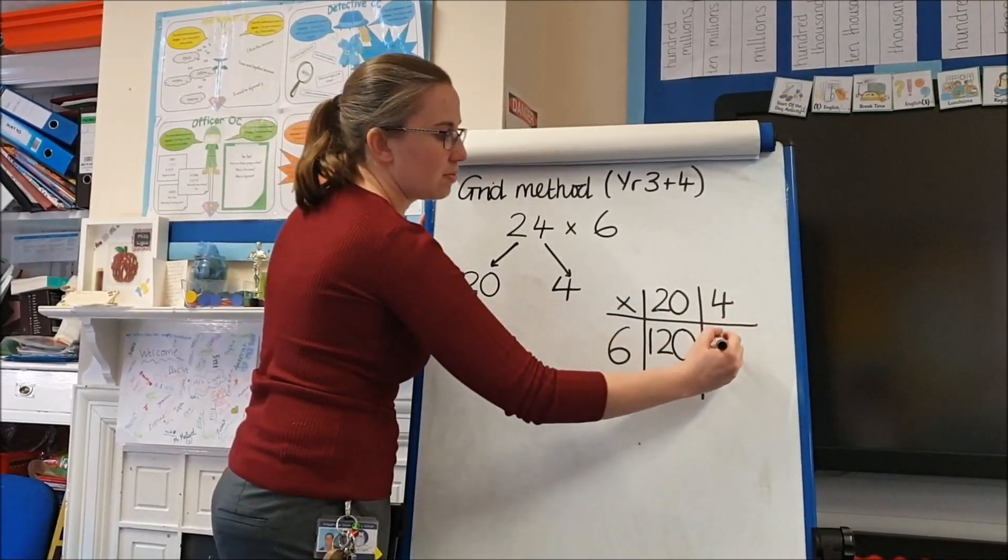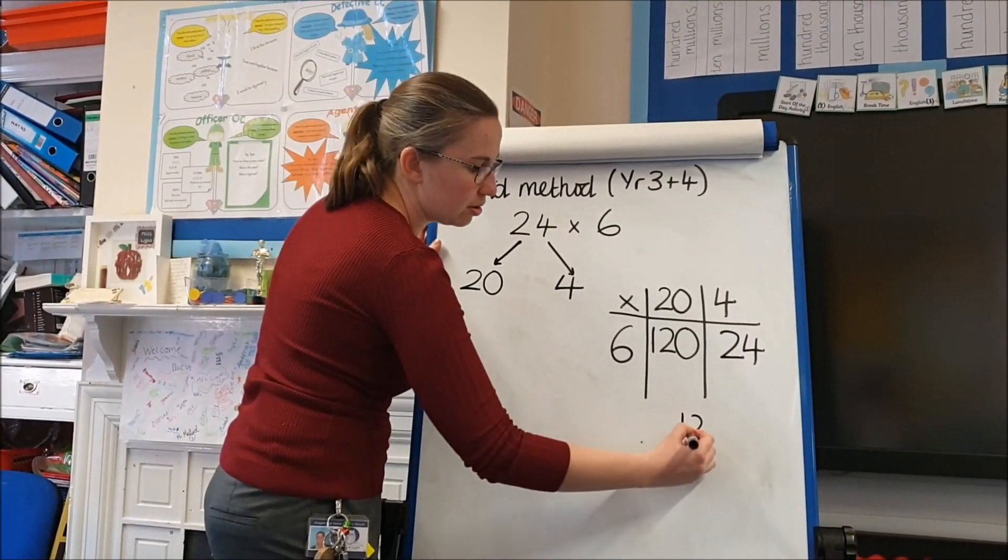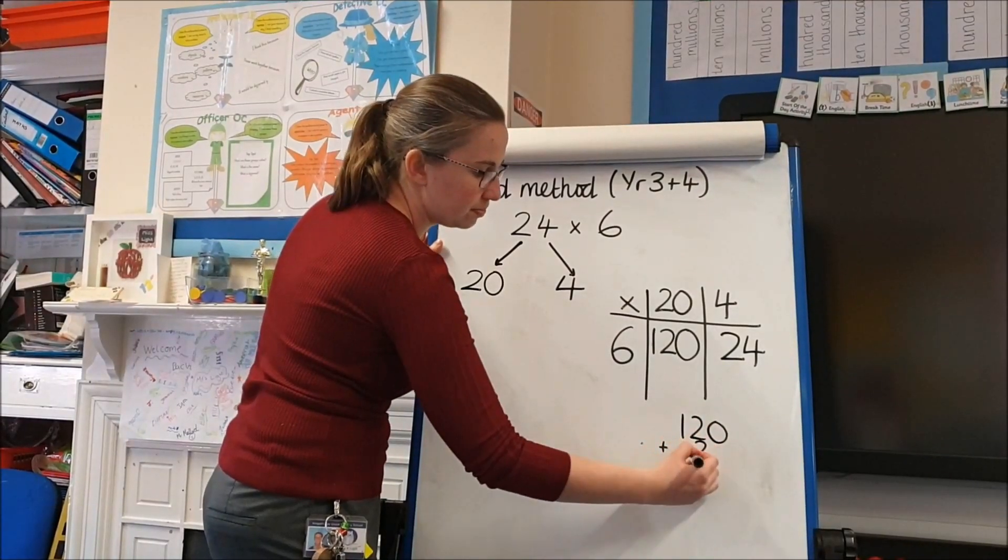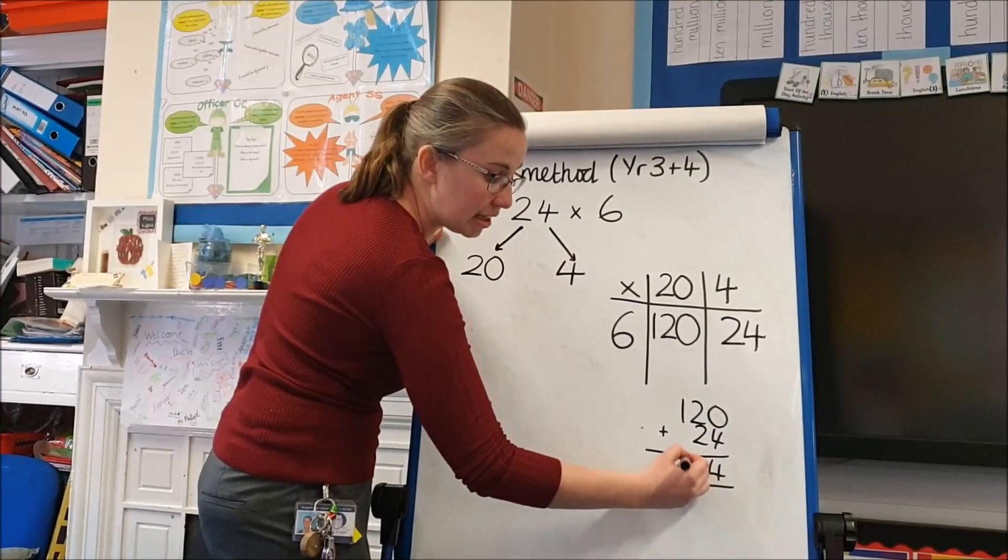And then I've got my 6 times 4, which is 24. And then the final thing I have to do is add my two components together, using column addition or mentally if I can.